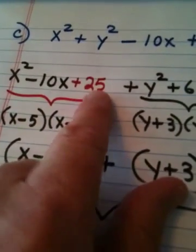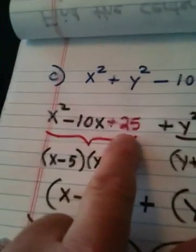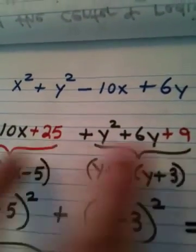Okay. This process, again, that I did here to come up with the 25 and the 9, which of course have to be added to both sides since this is an equation, is called completing the square.